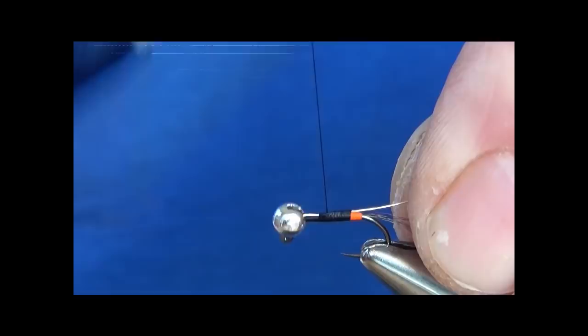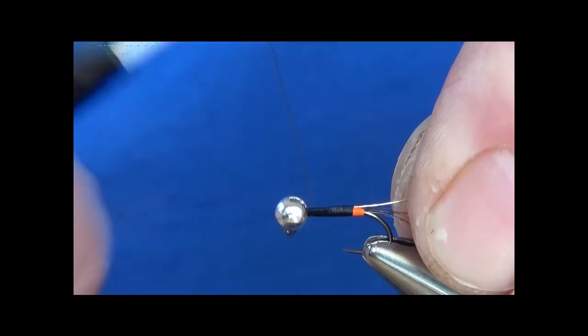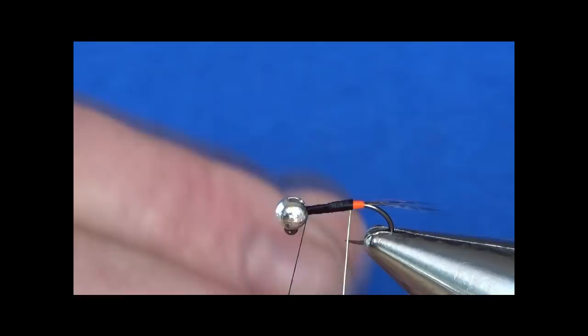As I'm tying in the wire, I like to extend the full length of the body—keeps the body nice and smooth and saves any ridges or bumps. So now I'm going to take that wire, wind it up the body, four or five nice even turns.